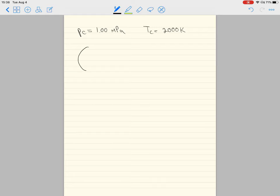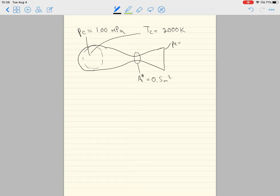The rocket motor has a converging-diverging nozzle with a throat area A* of 0.5 meters squared. We'll assume the exit pressure equals the atmospheric pressure, which is 1.00×10⁵ Pa. The questions are first to determine the nozzle exit Mach number.